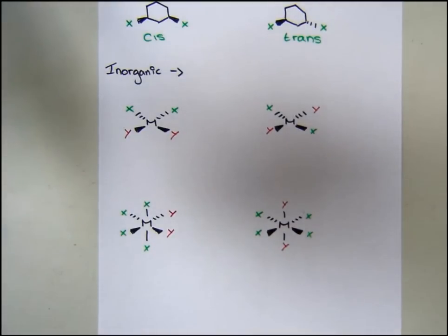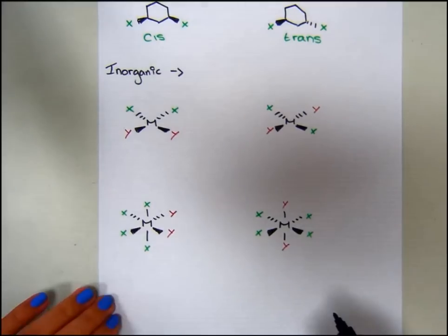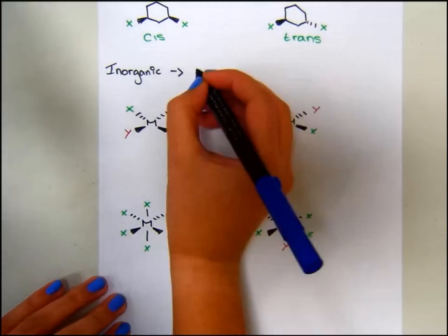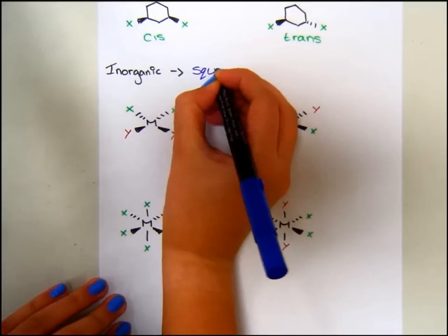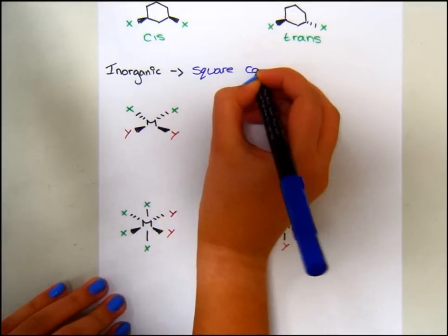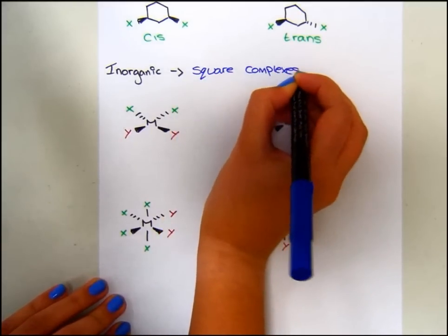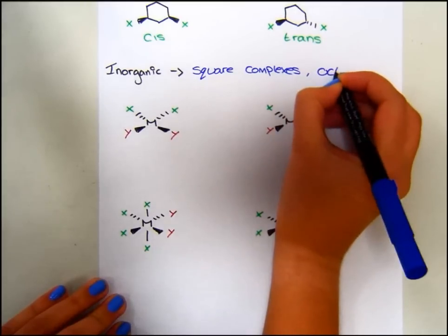In inorganic chemistry, cis and trans is used to assign the substituents on square planar complexes, as well as octahedral complexes.